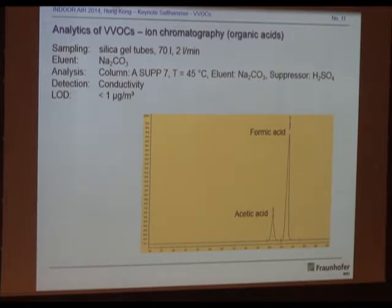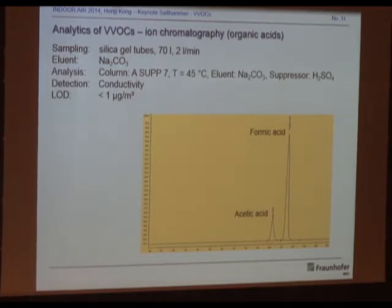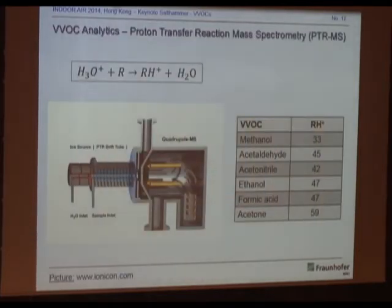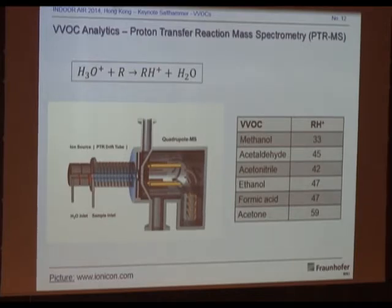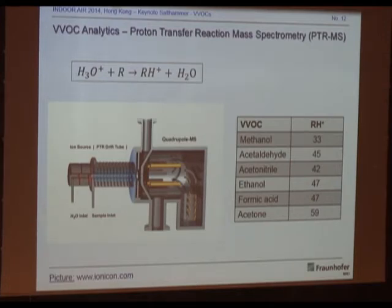My colleague Eric Uhde has a poster here on accurate measurements of organic acids in air. We use ion chromatography, which works very well — we developed a method with low detection limits. You can also measure organic acids by gas chromatography if you have a polar column available. And then, finally, Charlie mentioned PTRMS — proton transfer reaction mass spectrometry. I really like this method because it is suitable for many interesting VVOCs and other compounds: methanol, acetaldehyde, acetonitrile, ethanol, and so on. It is very good for test chamber work, with very low detection limits.